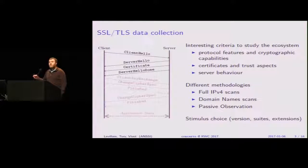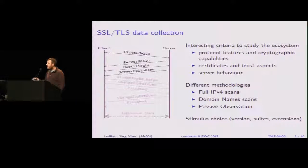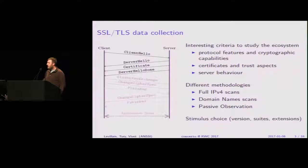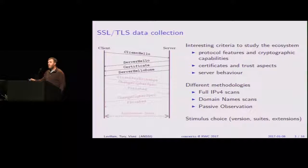There are traditionally three types of methodologies. You can do a full IPv4 scan, which allows you to see a lot of things. You can also do a scan based on a list of domain names, which allows you to look at the SNI extension and virtual hosting. And if you have access to a lot of willing users, you can do passive observation. In our case, we launched several full IPv4 scans in 2010, 2011, and 2014.